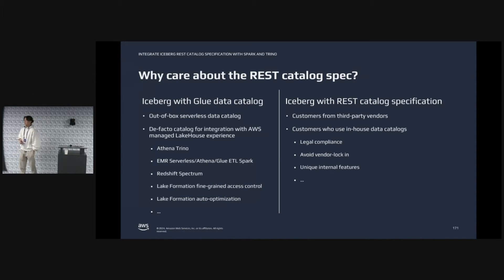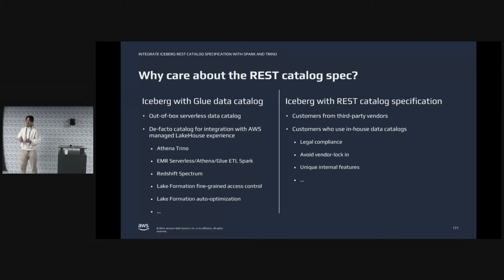However, there is always a different set of customers who want something different, and that is when the REST catalog specification comes in. Over the past years, we really see an increasing number of customers, especially EMR users, that are using REST. Some come from third-party vendors such as Tabular, Databricks Uniform, or Polaris, et cetera. And there's another group of customers that uses their in-house data catalogs and are not willing to use Glue or any other vendor — maybe because of legal compliance issues, maybe to avoid vendor lock-in. So they want to provide an Iceberg REST catalog interface that gives them the free option to integrate with all the engines using their in-house solutions.